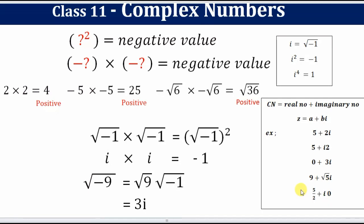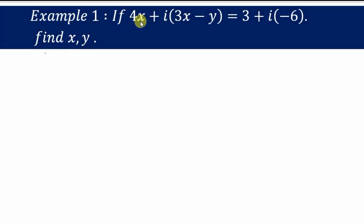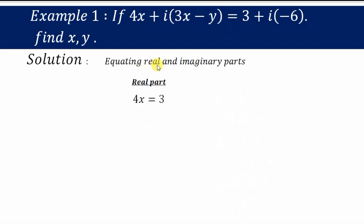Now in detail we'll go through examples. Example 1: if 4x + i(3x − y) = 3 + i(−6), find x and y. We can equate the real part and imaginary part separately to find the values. The real part gives 4x = 3, so x = 3/4.